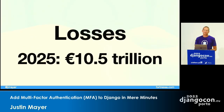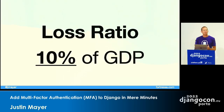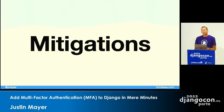I thought about this for a moment. What is global GDP? What is the output of all of the planet's economic activity? Well, it's about 100 trillion. So that means we have a loss ratio of about 10% of global GDP to criminal activity and other crimes committed on the internet. That is a staggering proportion. Clearly, usernames and passwords are not good enough to prevent this kind of damage from happening.